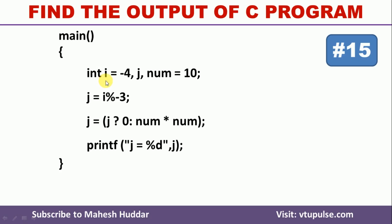In this program, three variables of type integer are declared. Two of them are defined with initial values: i is equal to minus 4 and num is equal to 10, and j is just declared as integer with no value in this case.